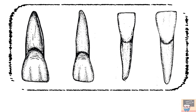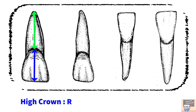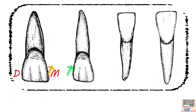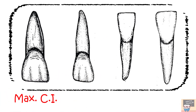Look at the labial aspect of the tooth in the first diagram and you will notice that the crown length and the root length are almost the same, that is it has a high crown to root ratio. Also the cervico-incisal and the mesiodistal dimension of the crown are almost comparable. The mesio-incisal angle is sharp and the disto-incisal angle is a bit rounded. Also the incisal edge is straight. So these features indicate that the tooth is a maxillary central incisor.